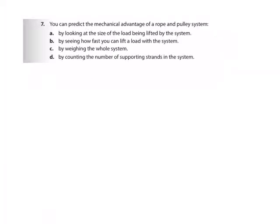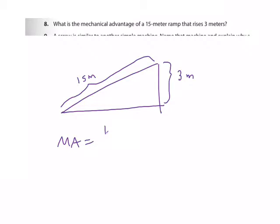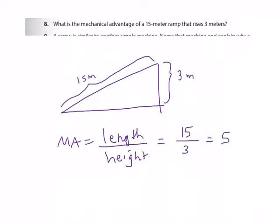Number seven: you can predict the mechanical advantage of a rope and pulley system by counting the number of support strands in the system. Number eight: what is the mechanical advantage of a 15-meter ramp that rises 3 meters? An inclined plane has a specific mechanical advantage formula you need to remember: it is the length of the ramp divided by the height of the ramp. So 15 ÷ 3 gives a mechanical advantage of 5.